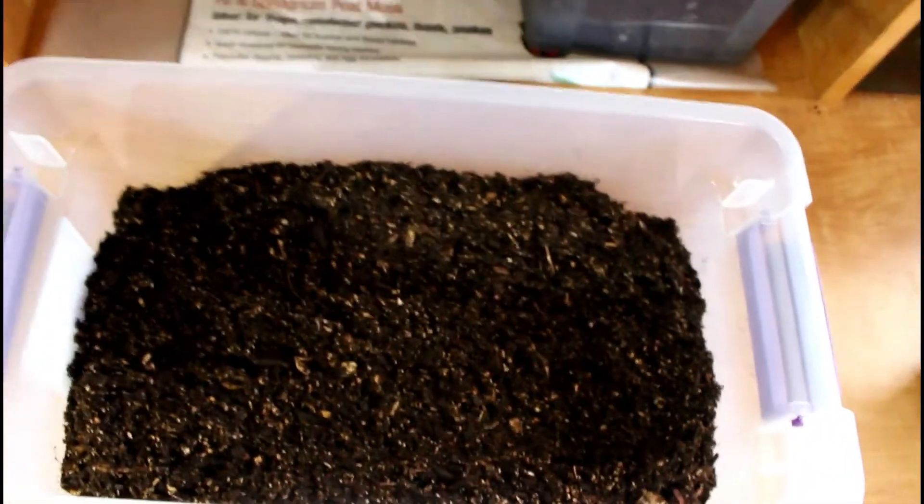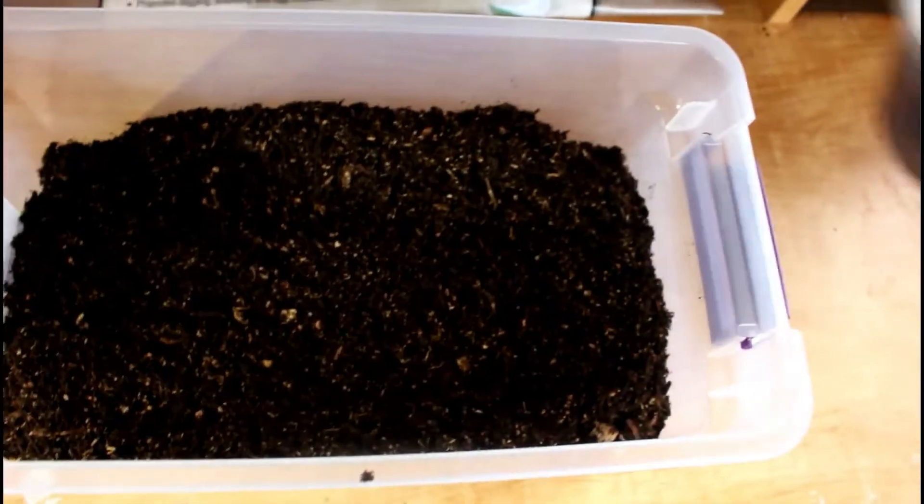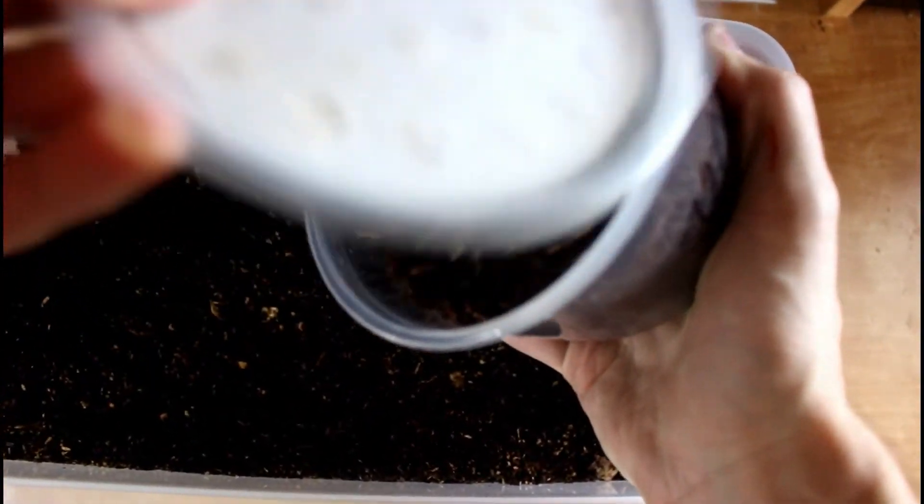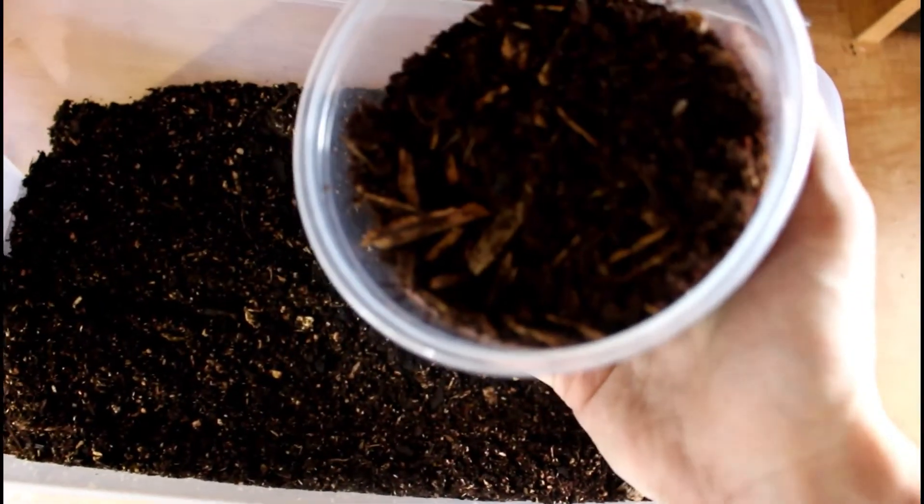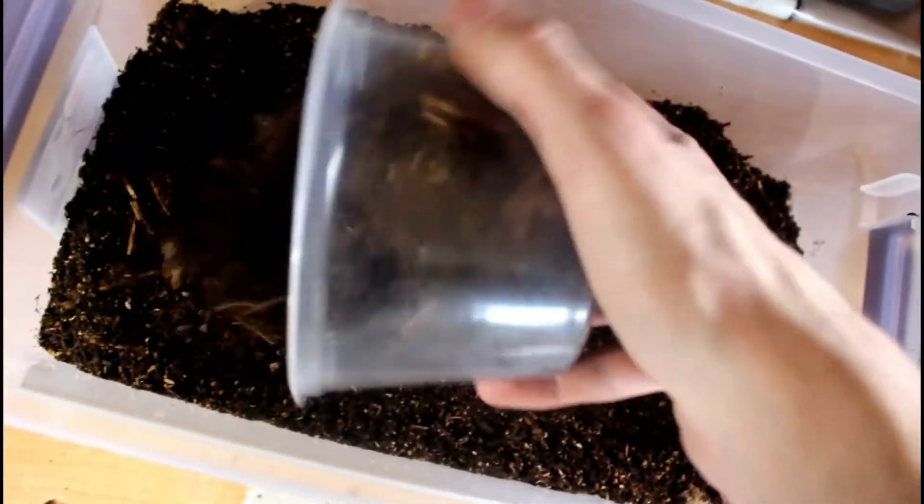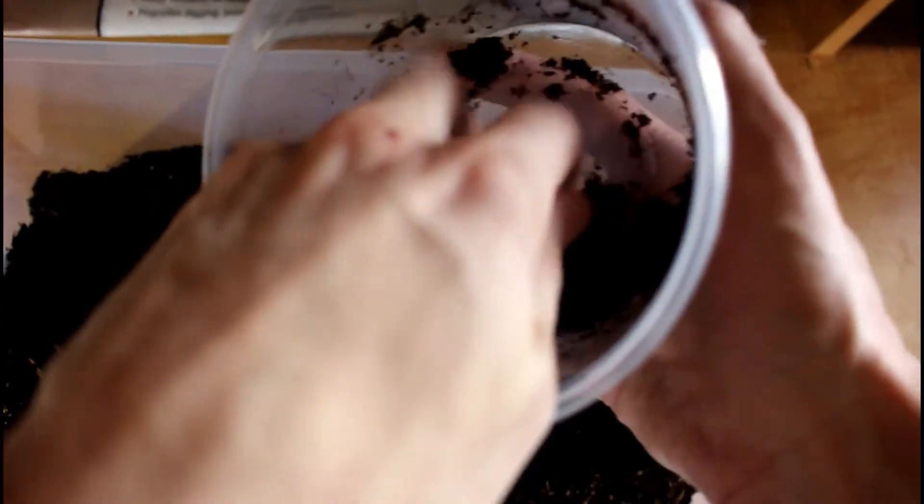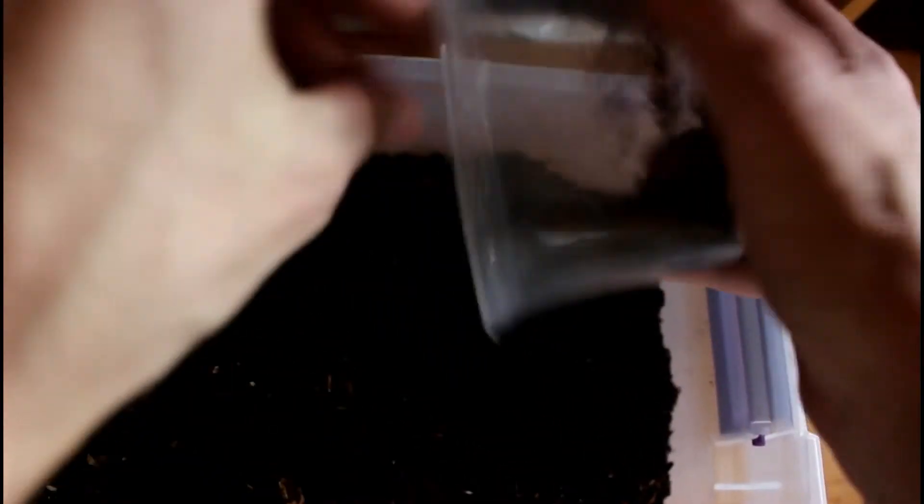But next thing we do is we're going to add the isopods. Now you're just going to dump the entire culture in there. If we can get the top off. There we are. We're going to dump the entire culture, make sure everything's in there. Get a little bit of stuff at the bottom. We're just going to scoop that out. No isopods left behind.